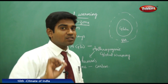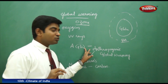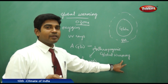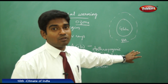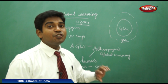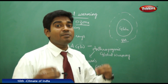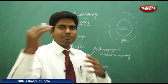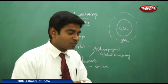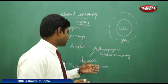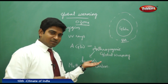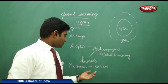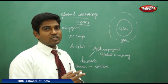Now we have the concept of AGW — Anthropogenic Global Warming. Anthropogenic means human-made. Because of man-made activities, the globe is getting warm and the earth is experiencing high temperatures with bad effects. Anthropogenic simply means caused by humans — it is nothing complicated.